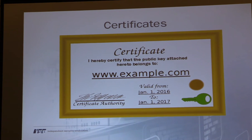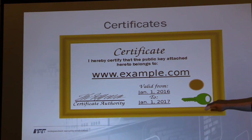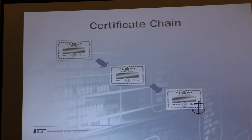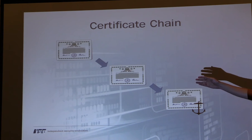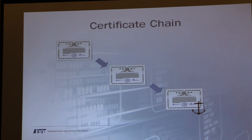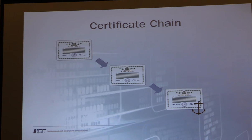A certificate takes a public key and binds it to a domain name using asymmetric cryptography. Fields include the distinguished name, a validity period, the public key, and a signature by the certificate authority. Certificates chain together: a server certificate is signed by an intermediate CA, which is in turn signed by a root CA. TLS-supporting applications either come with an embedded list of trusted roots or ask the OS. Mozilla, Google, and Apple each run programs to decide who qualifies as a trusted root CA — and just because they trust someone doesn't mean you should.